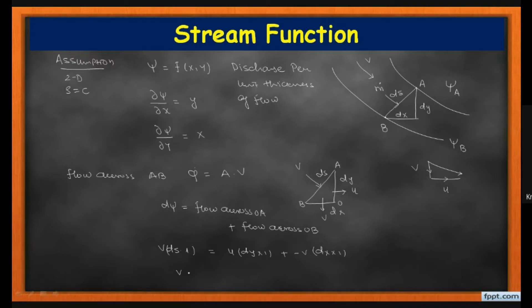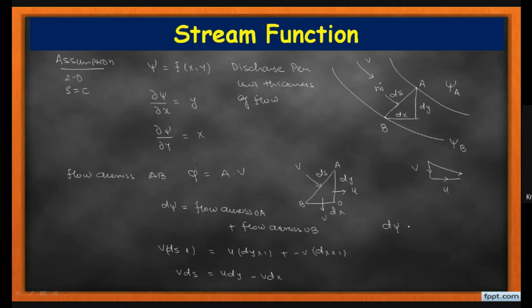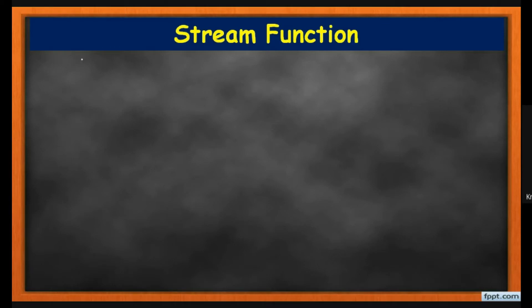Finally, our expression is V·ds = u·dy − v·dx. Since the stream function is the discharge per unit thickness, we get dψ = u·dy − v·dx. Integrating both sides: ∫dψ = ∫u·dy − ∫v·dx. This is our first expression.